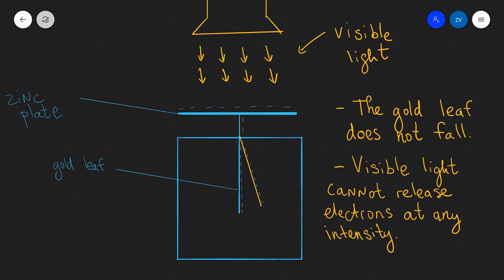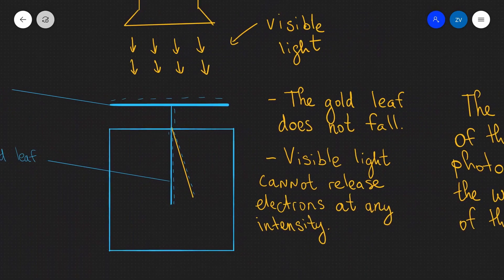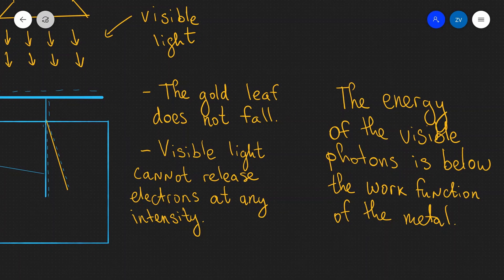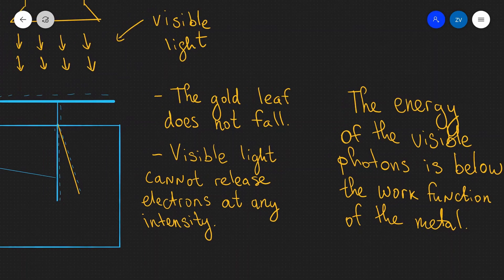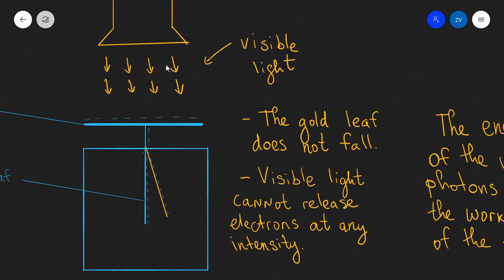Now the reason why visible light cannot release any electrons whatsoever at any intensity is actually really interesting. And I've written it over here and this is because the energy of the visible photons is below the work function of the metal. So once again the energy of each of those individual photons is below the work function of the metal. And remember the work function is the minimum amount of energy required to release an electron from the surface of the metal.